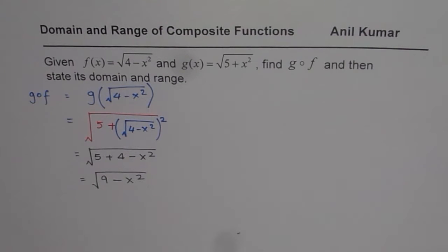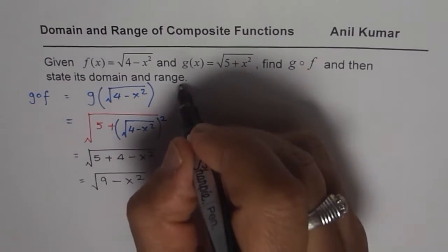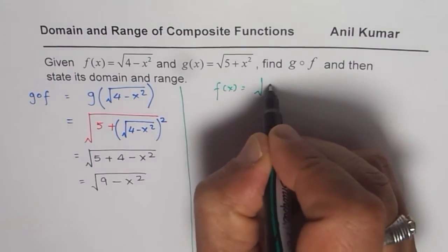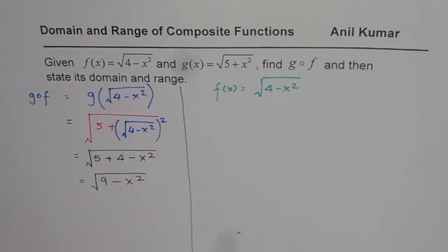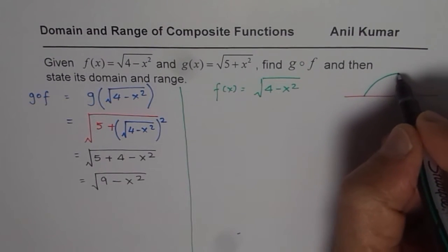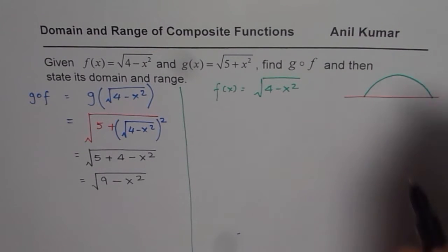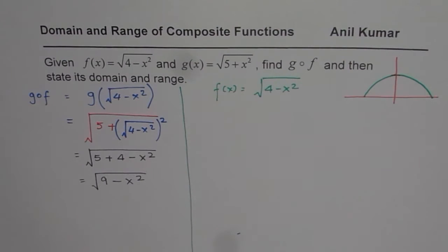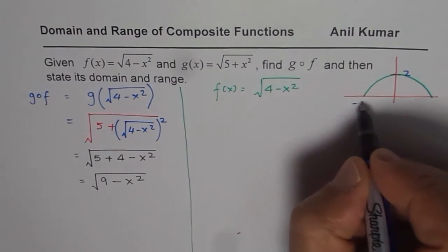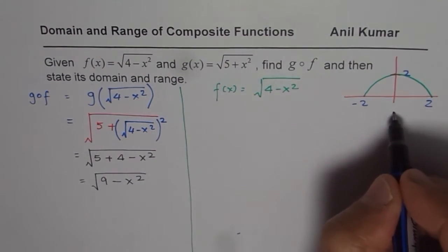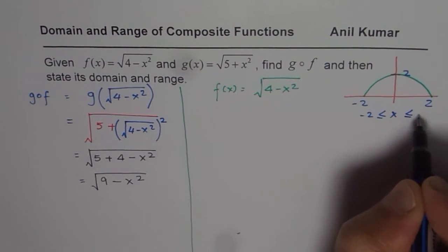Now the interesting part is to find the domain and range. The domain of f(x) is restricted. f(x) = √(4 - x²), and if you sketch this function you get a semicircle. At x = 0, you get √4 = 2, so the maximum is 2. At x = ±2, you get 0. So the permitted values for f(x) are -2 ≤ x ≤ 2.